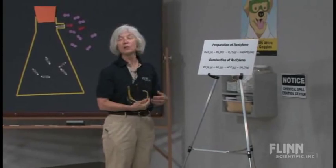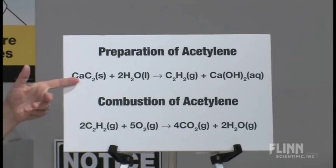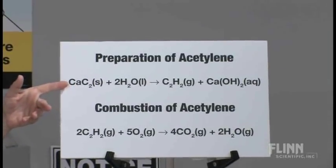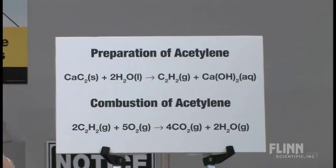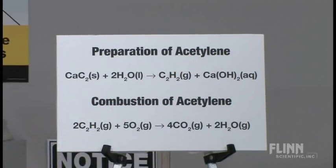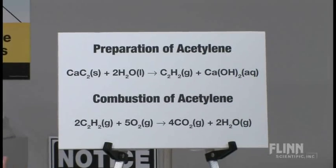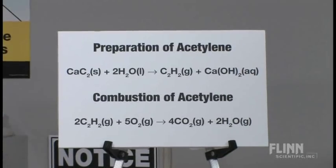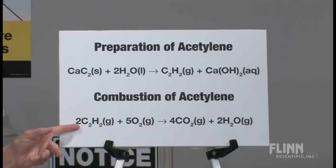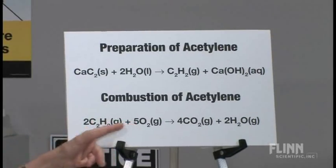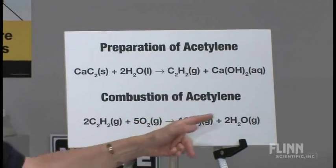Now remember that there were two things happening here. We had first to prepare the acetylene, and that was by using calcium carbide, CaC2, reacting it with water, getting our acetylene, C2H2. And calcium hydroxide is an additional product here. So if you want to talk about acid-base chemistry sometime later in the year, you can also mention this equation. Now the actual combustion of acetylene is shown here. And that's reacting the acetylene with oxygen to make carbon dioxide and water vapor. Now, this is a clean combustion.